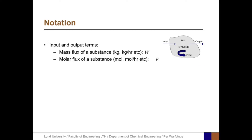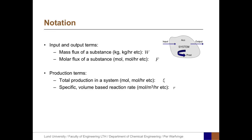We will use the following notation. Mass fluxes of substances, expressed in kilograms or kilograms per hour, will be denoted W. Molar fluxes of substances, in moles or moles per hour, will be denoted F. The production terms can be expressed as total production in the system — for example, moles or moles per hour — using the Greek letter Xi. A specific volume-based reaction rate, in moles per cubic meter per hour, will be denoted with a small r.